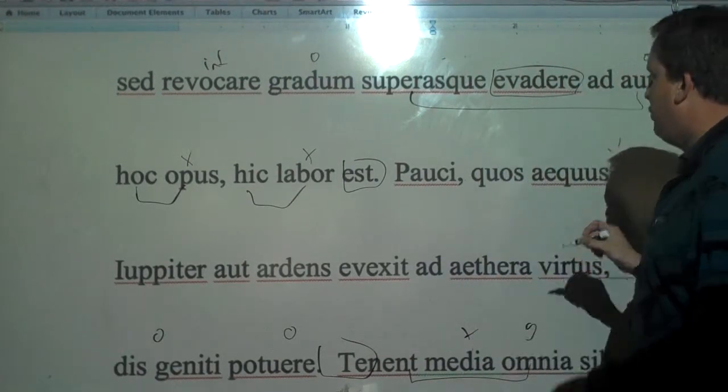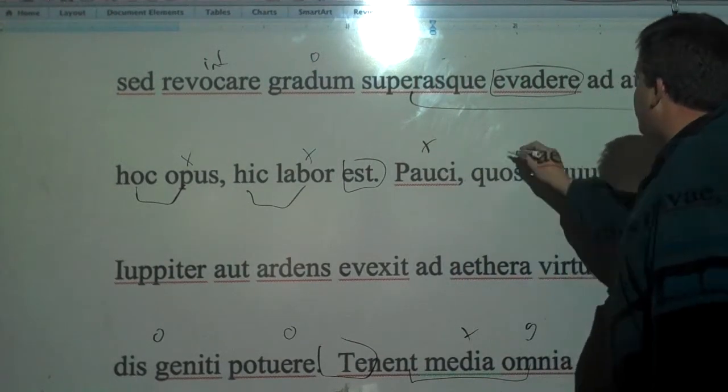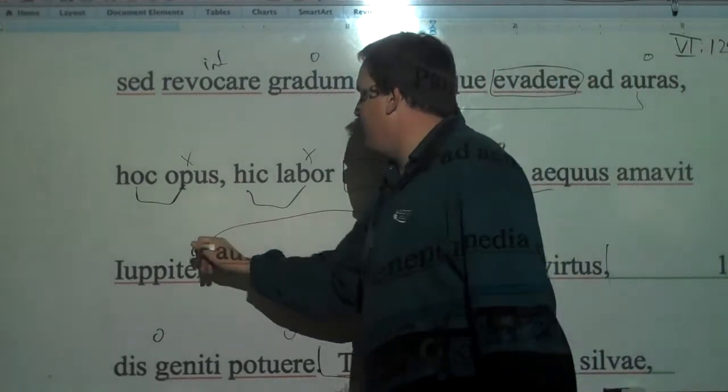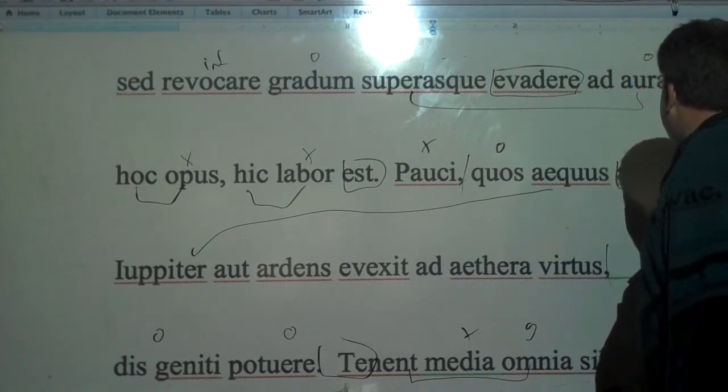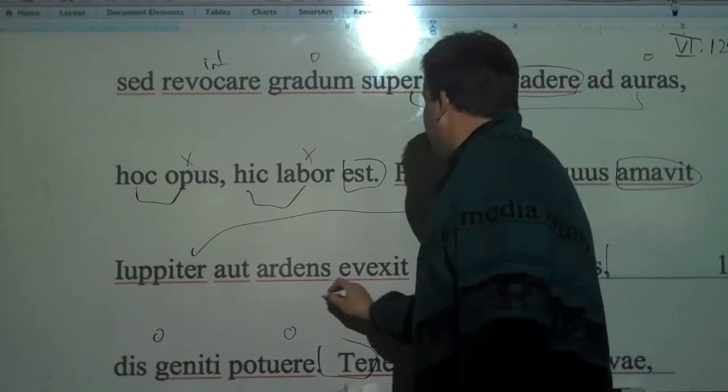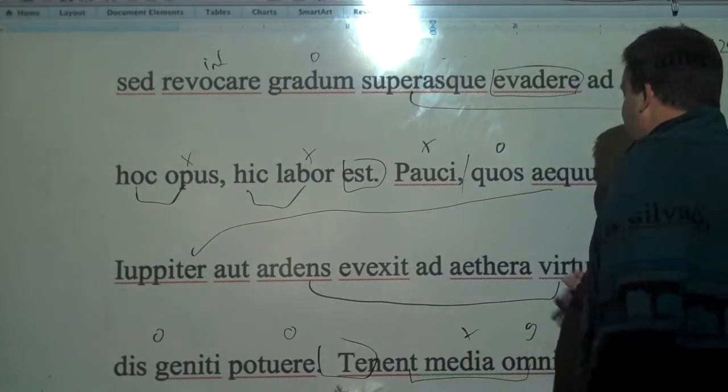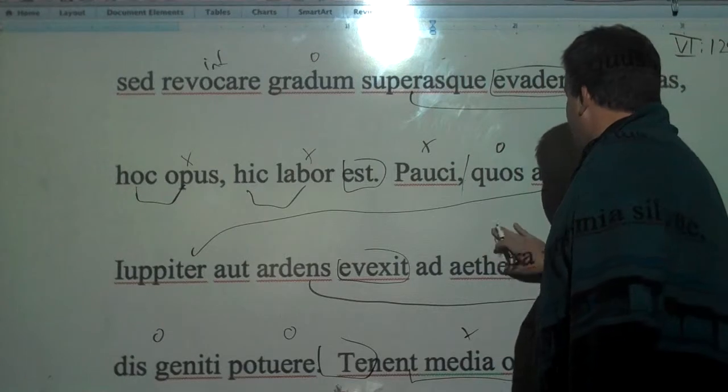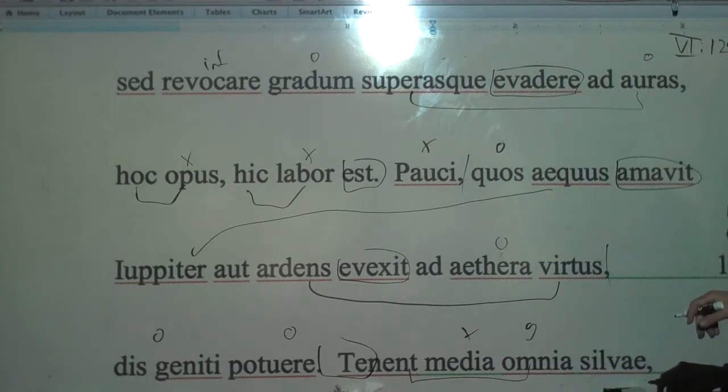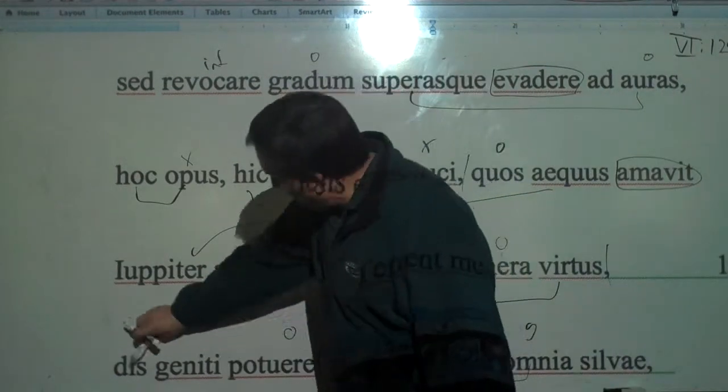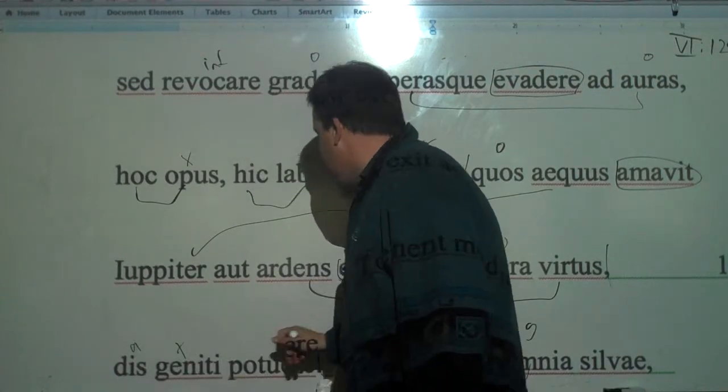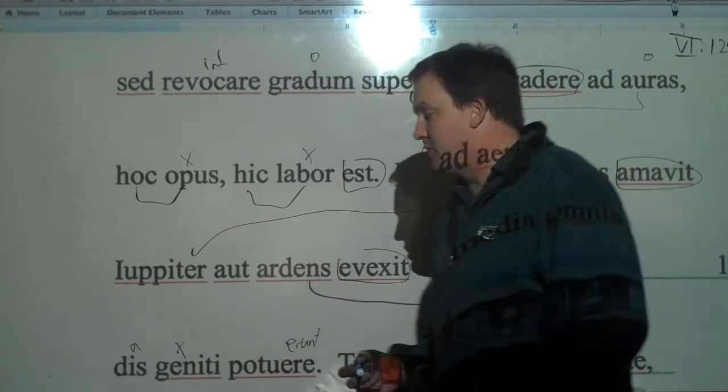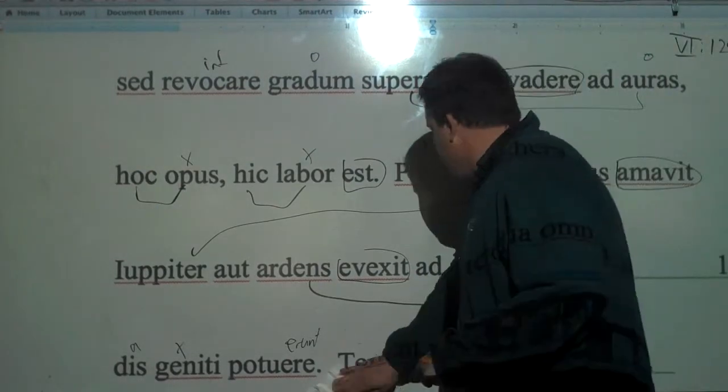Pauci - a few people whom, and we have a relative clause here, whom the aequus Jupiter, the equal Jupiter, the calm Jupiter, the fair Jupiter loved, amavit. Or burning virtue carried, vexit - this is from veho - carried to the upper airs, like to heavens. So a few people whom the equal Jupiter loved, or burning virtue carried to the heavens, born from gods - geniti, PPP - were able. Potuere - remember, this will be on the AP. Potuere, were able to do this. So able to come back up.